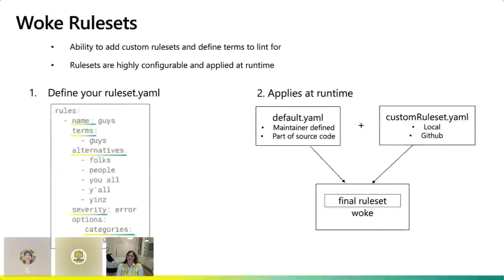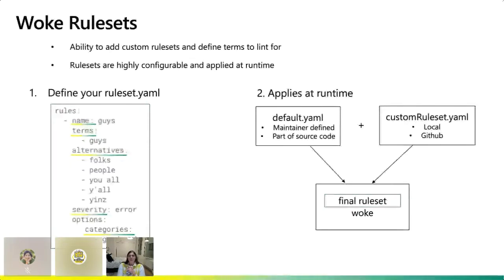What is happening behind the scenes when you use Woke? The maintainer has provided a default rule set to get you started, defined from Twitter's defined use of non-inclusive language — it's a good place to get going. On top of the default rule set, you have the ability to build out custom rule sets. This is great because you can start with the default and continue to grow your own rule set for your team. Custom rule sets can live locally on your machine, and I also built a feature that allows you to pull them in from GitHub. At runtime, Woke takes the combination of terms in the default rule set and your custom rule set and applies them to a final rule set to lint against.